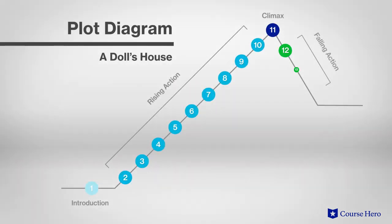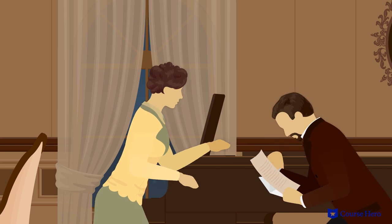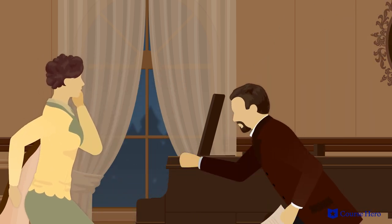In the play's climax, Torvald reads Krogstad's letter, revealing the loan and forgery. In the falling action, Torvald calls Nora immoral, showing his self-centeredness and chastises her viciously.